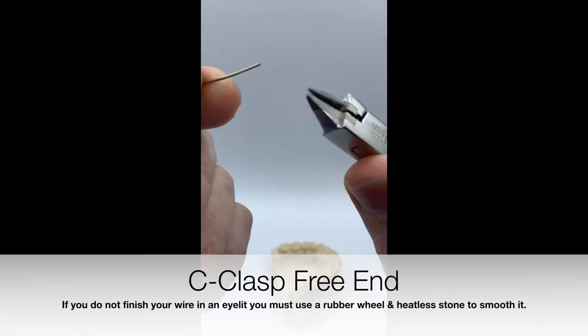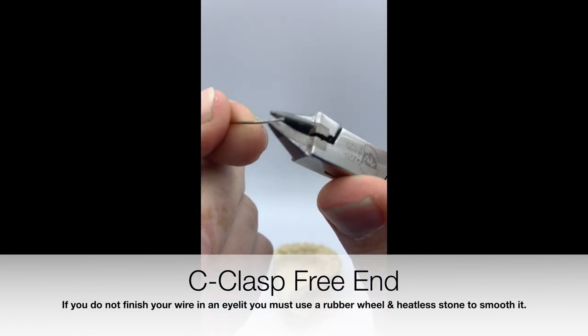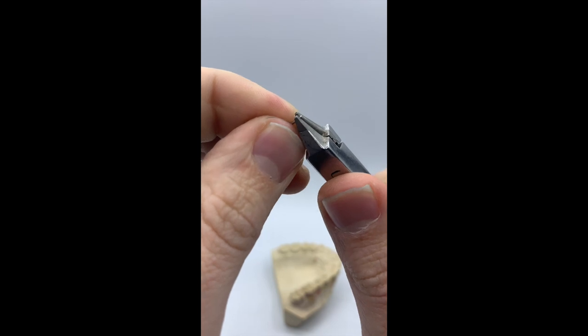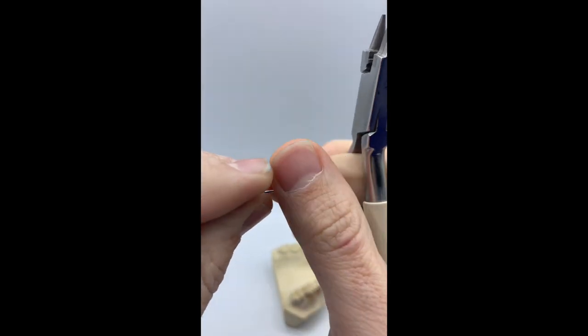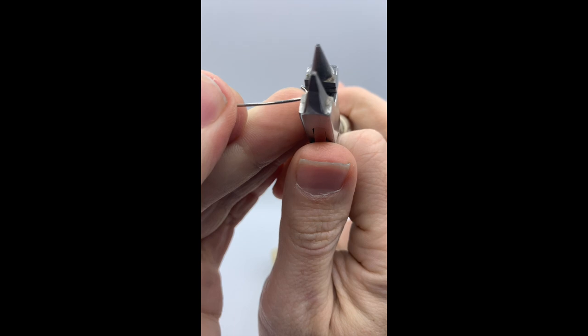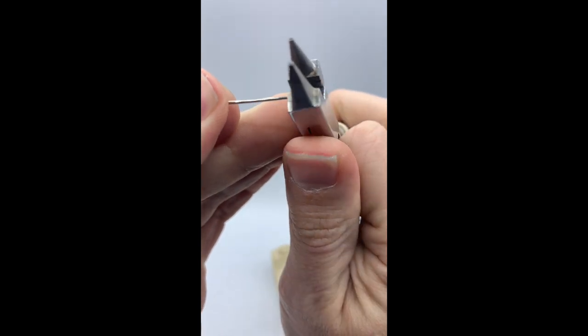Every technician will finish the edge of the wire differently. This here is how to make an eyelet. It's a short bend and then you squeeze the edge with your plier. This will give you a smooth finish.